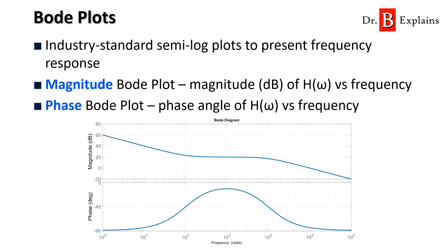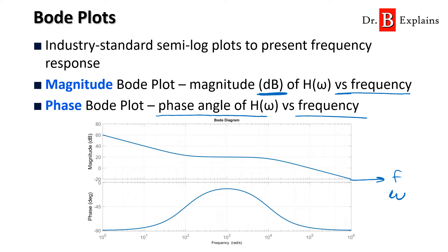What are Bode plots? They are used to present the frequency response, and we can have two types: the magnitude Bode plot and the phase Bode plot. They are usually presented in pairs. In the magnitude plot, we have the magnitude in dBs on the y-axis versus frequency on the x-axis, sometimes using omega (angular frequency in radians per second). In the phase Bode plot, we have the phase angle on the y-axis and frequency on the x-axis. Let's look at how to actually do this.